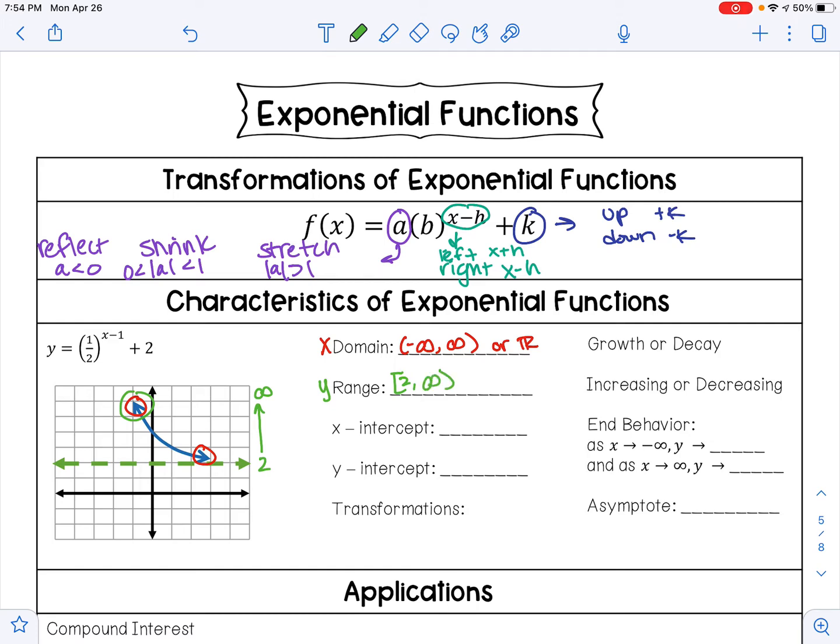So our range is from 2 to infinity, or as an inequality you could say y is greater than or equal to 2. Your x-intercept is where your exponential curve crosses your x-axis.